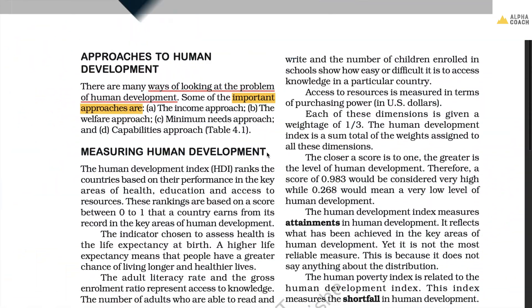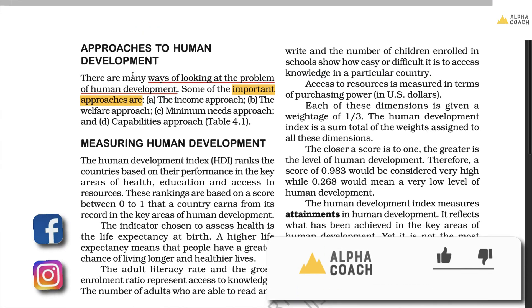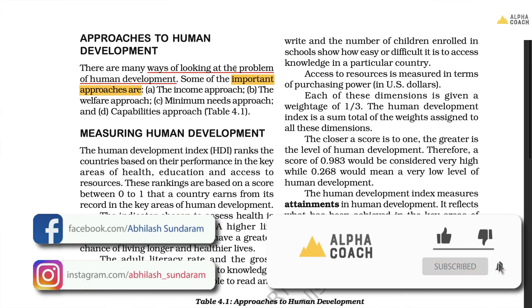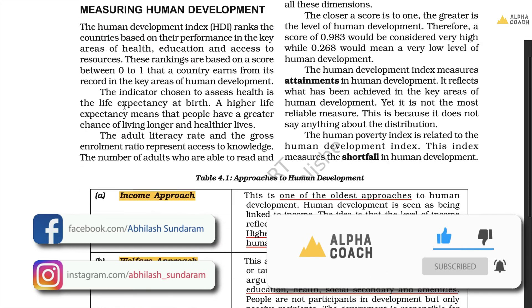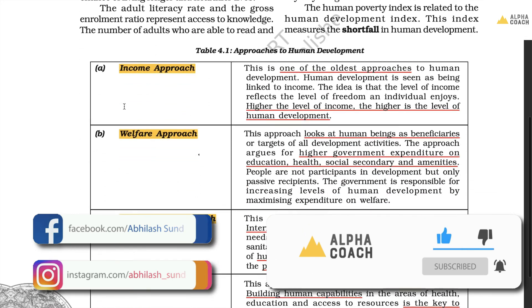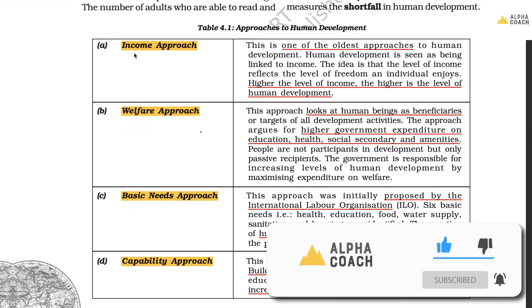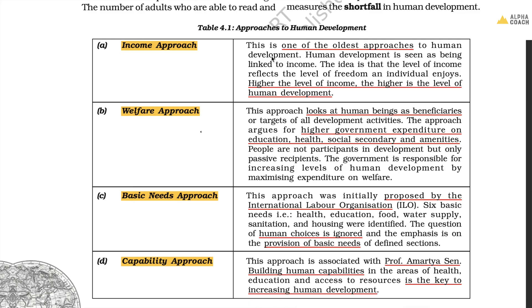Let's quickly go through the four approaches to human development. First is the income approach — this is one of the oldest approaches. It basically says that higher the level of income, higher is the freedom enjoyed by people, and hence higher is the human development.